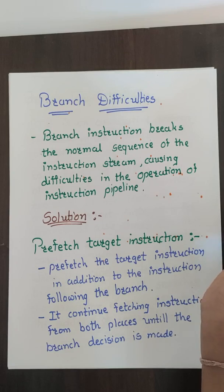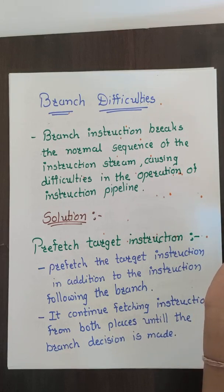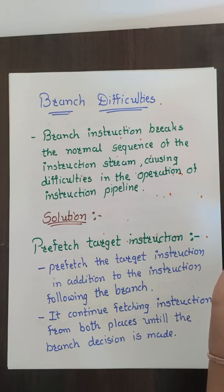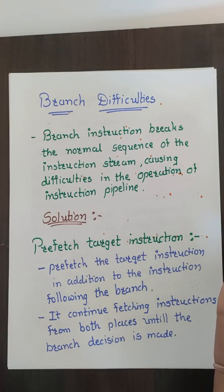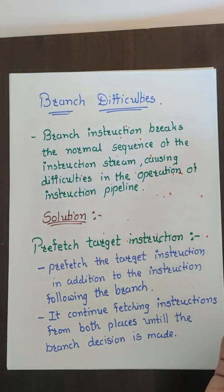For data dependency, we have three options. First, hardware interlock — a circuit that detects source and destination instructions where dependent operands are needed and inserts the required delays. Second, operand forwarding — special hardware that creates a direct path between pipeline segments so data moves segment to segment. Third, delayed load, where we add a no-operation instruction.